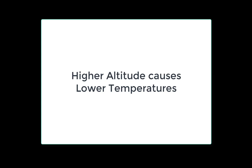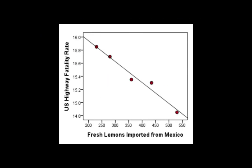Sometimes though, two variables can be closely correlated but there is no causation implied. Like you're seeing here, this scatterplot is indicating a negative relationship between lemons imported from Mexico and the number of US highway fatalities. So the more lemons, the less fatalities.